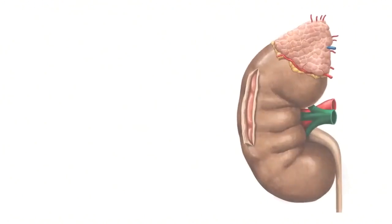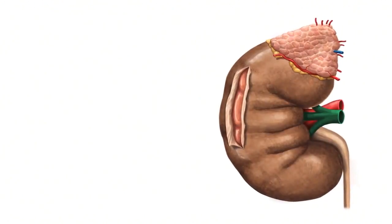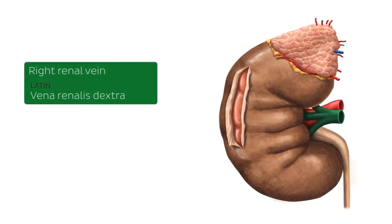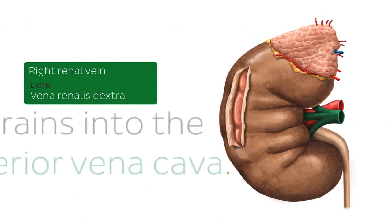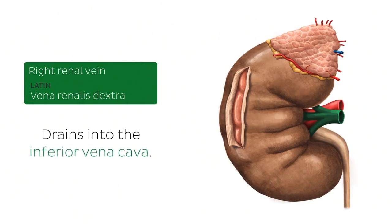The next structure highlighted in green is another blood vessel found on both kidneys — now we're looking at the right renal vein. Both the right and left renal veins exit the kidney at the hilum. The renal veins drain blood into the inferior vena cava.